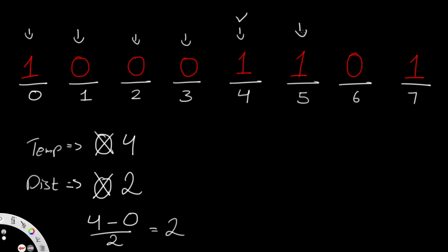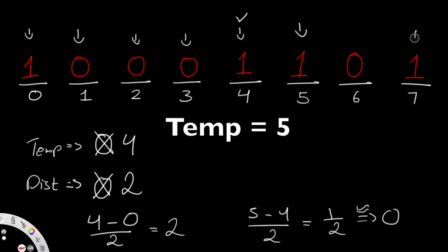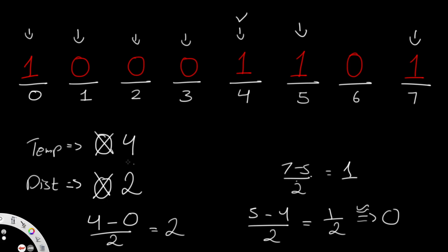Continuing through the loop, we encounter another taken seat at index seven. We compute (7 − 5) / 2 = 1. Comparing one with our current maximum of two, two is still greater, so our answer remains two. When we reach the end of the loop, we return whatever our distance value is — in this case, two.